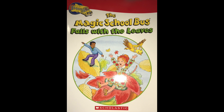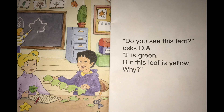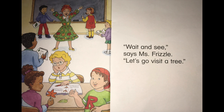The Magic School Bus Falls with the Leaves, read to you by Miss Keating. "Do you see this leaf?" asked EA. "It is green, but this leaf is yellow. Why?" "Wait and see," says Miss Frizzle.